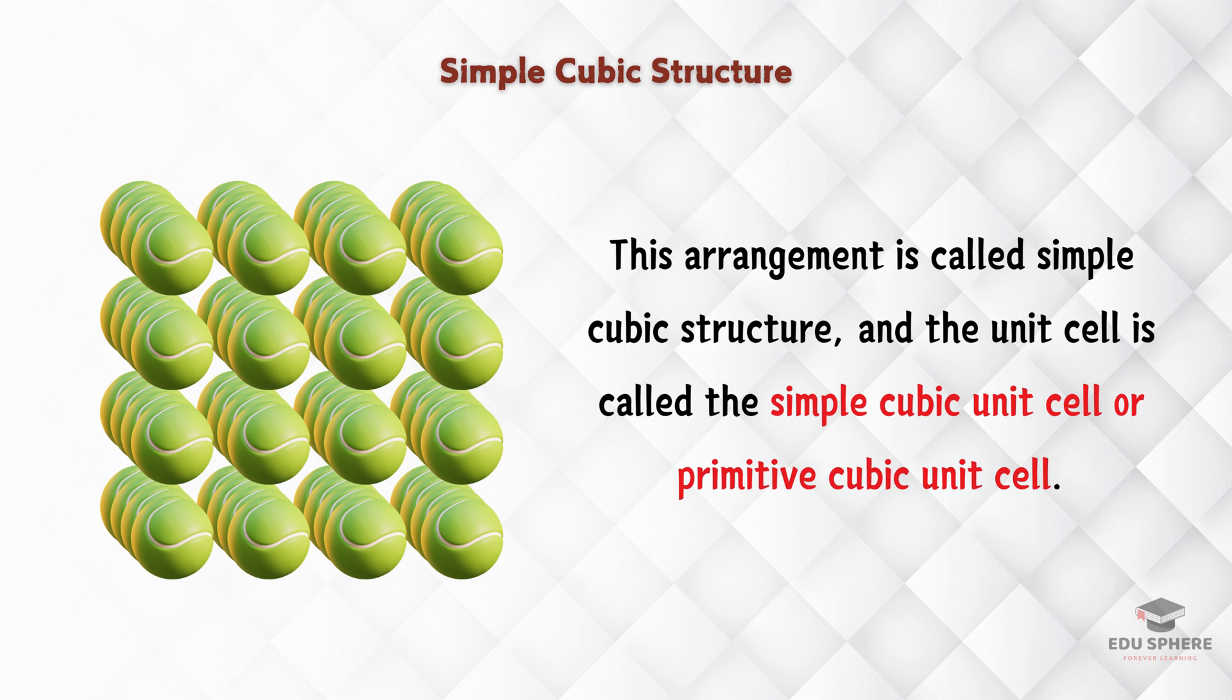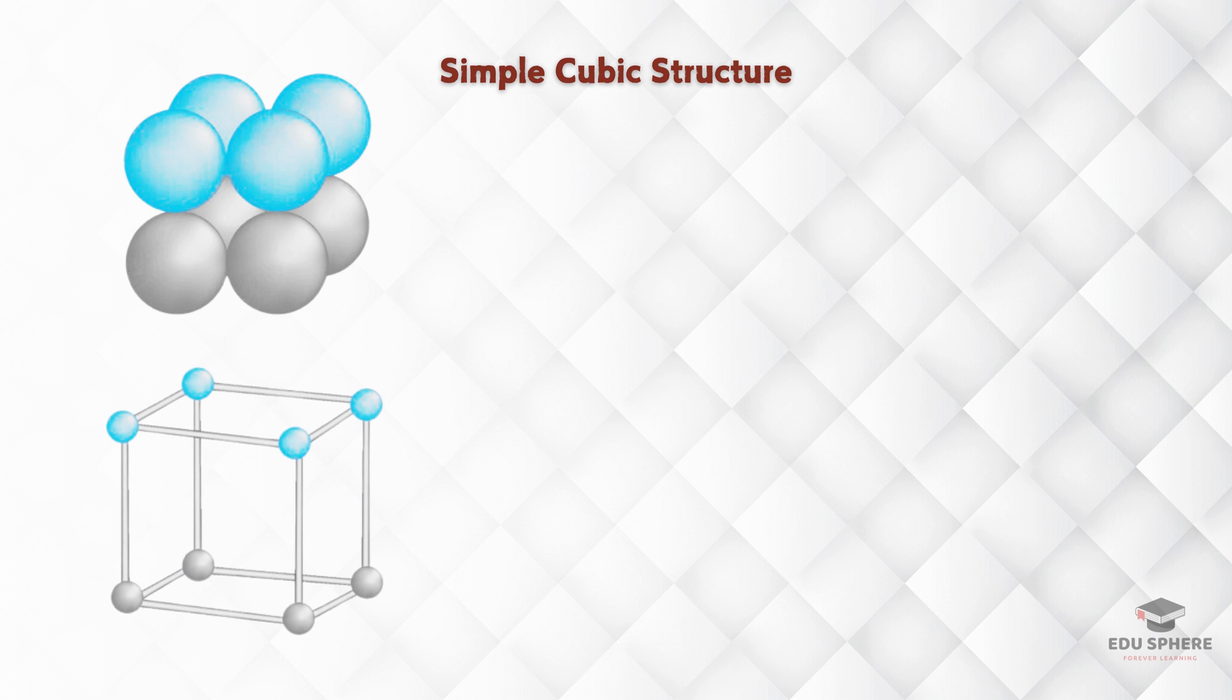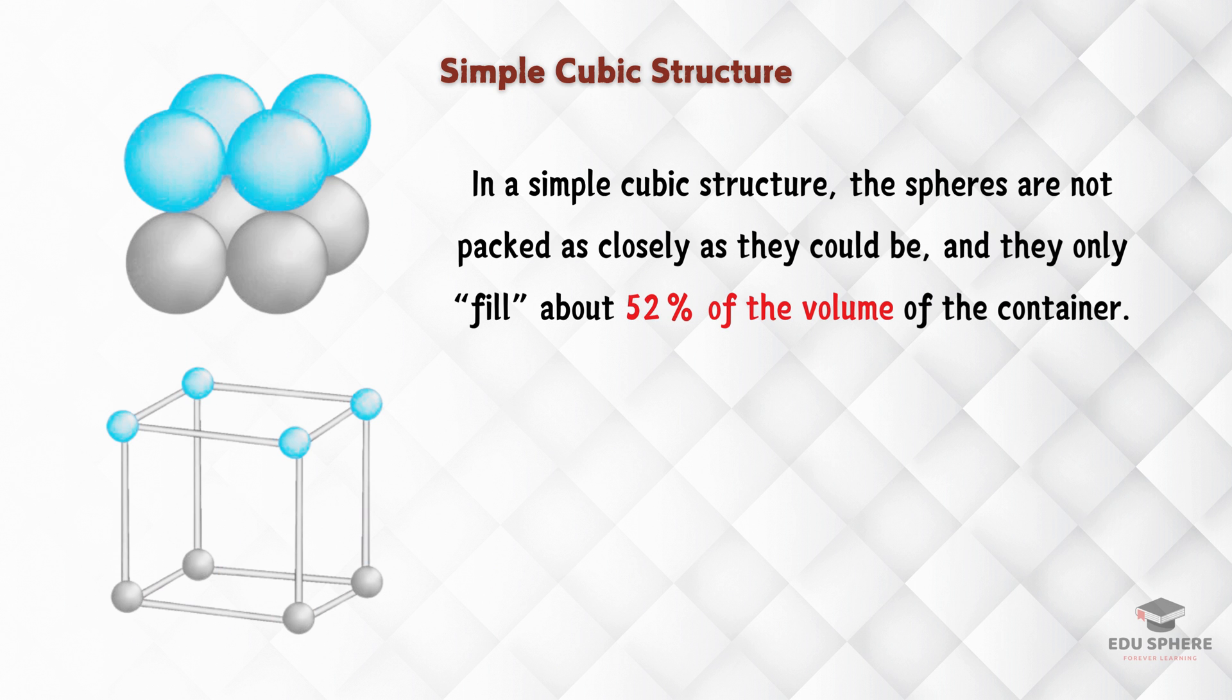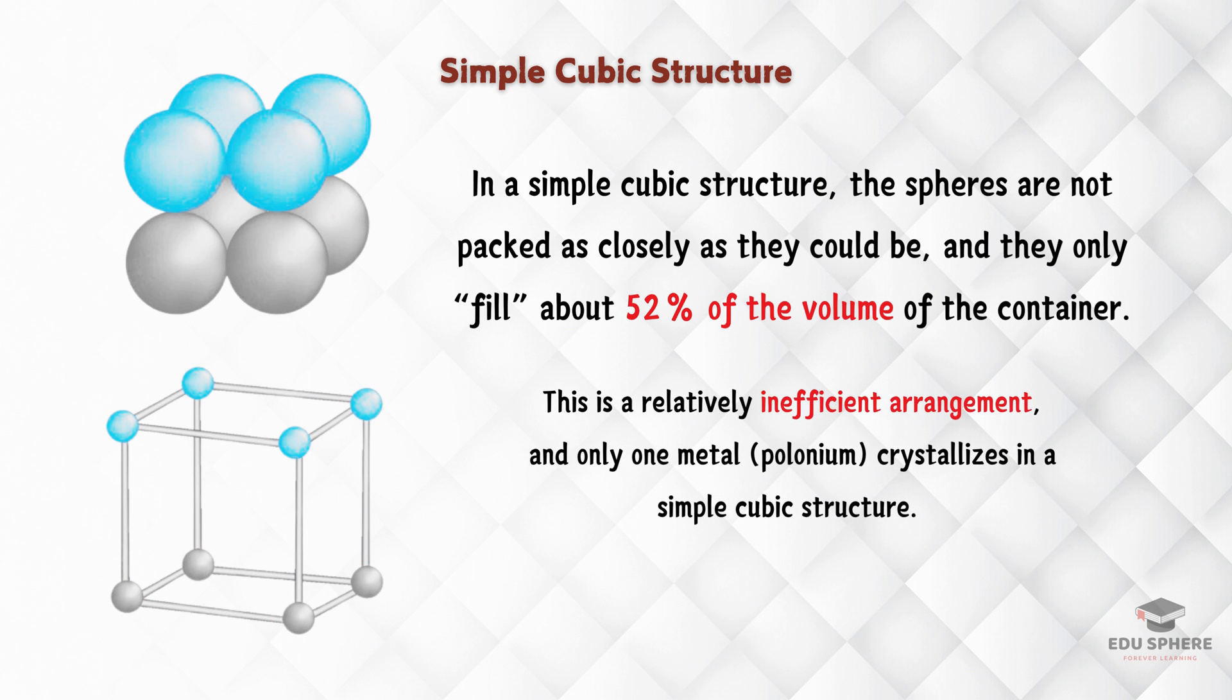So, how efficient is this packing? Well, it turns out the spheres in a simple cubic structure leave a lot of empty space. In this arrangement, the spheres only fill about 52% of the container's volume. This loose packing makes simple cubic a bit inefficient for most materials. Interestingly, only one metal, polonium, naturally forms a simple cubic structure.